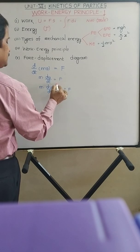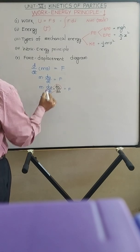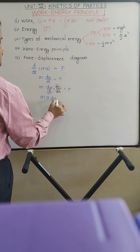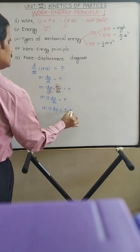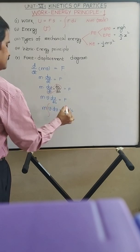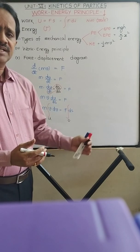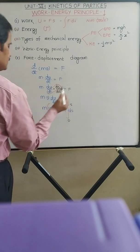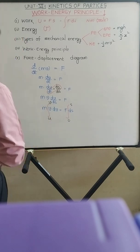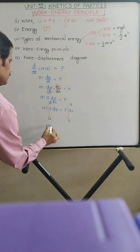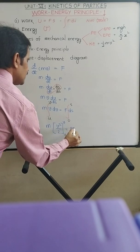Now, dS/dt is the velocity, so the expression becomes M·V·(dV/dS) = F, which gives M·V·dV = F·dS. Integrating both sides — when S = 0, velocity is the initial velocity U; when S = S, velocity is the final velocity V — we have M·(V²/2) evaluated from U to V, equal to F·S evaluated from 0 to S. Putting in the limits gives MV²/2 − MU²/2 = F·S.